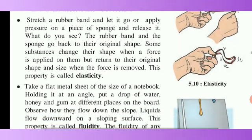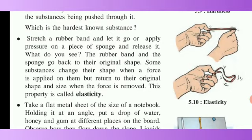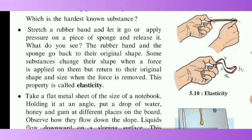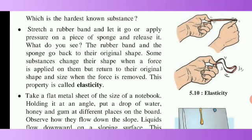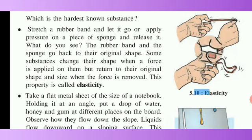Stretch a rubber band and let it go, or apply pressure on a piece of sponge and release it. What do you see? The rubber band and the sponge go back to their original shape. Some substances change shape when a force is applied, but return to their original shape and size when the force is removed. This property is called elasticity.